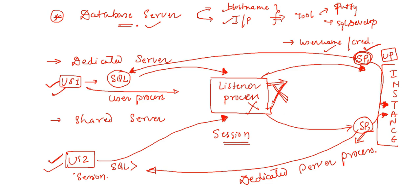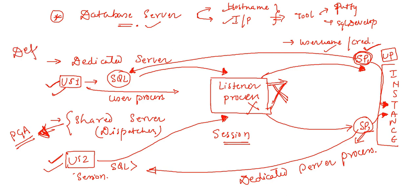In case of shared server, there is one more mediator that comes into the picture - that we will study in the next part. But remember, dedicated server is mostly used in production and non-production domains in the market, and this is the default configuration. When you are configuring a database with the help of DBCA or manually, the default server process will be a dedicated server process. So this is it about dedicated server process, shared server process and database servers.